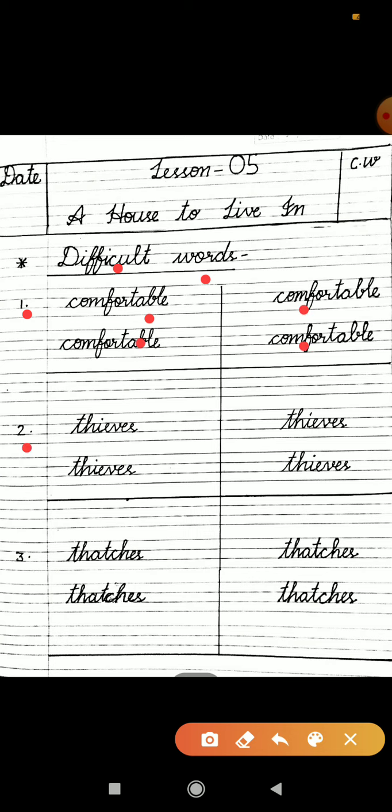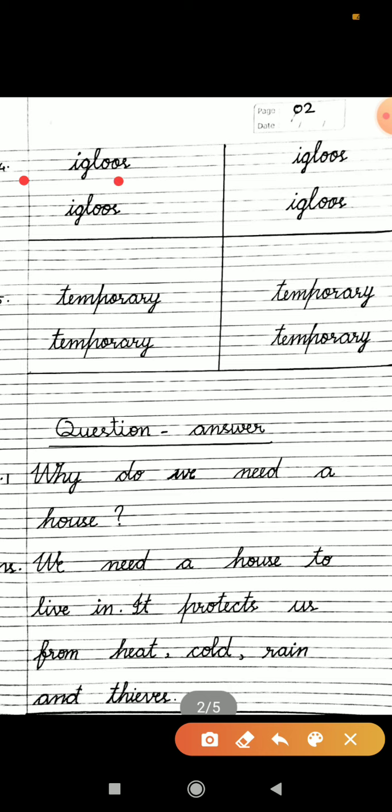Then the third, Thatches. Its spelling is T-H-A-T-C-H-E-S. You will write it also four times. After completing these three, we will come to the fourth number, that is Igloos, I-G-L-O-O-S. You will write it also four times.